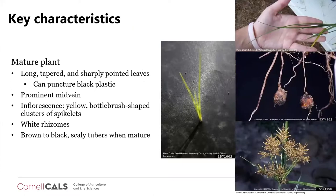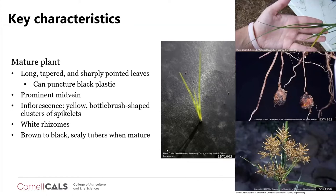The mature plant is long and tapered with sharply pointed leaves. It won't puncture you, but it can puncture black plastic and landscape fabric. It has a prominent mid-vein, and its inflorescence — or flower clusters — are yellow with a bottle-brush shape in clusters of spikelets. It reproduces by rhizomes and tubers. During the season it mostly reproduces by rhizomes, and at the end of the rhizomes you see the tubers. When mature, it produces brown to black, scaly tubers.